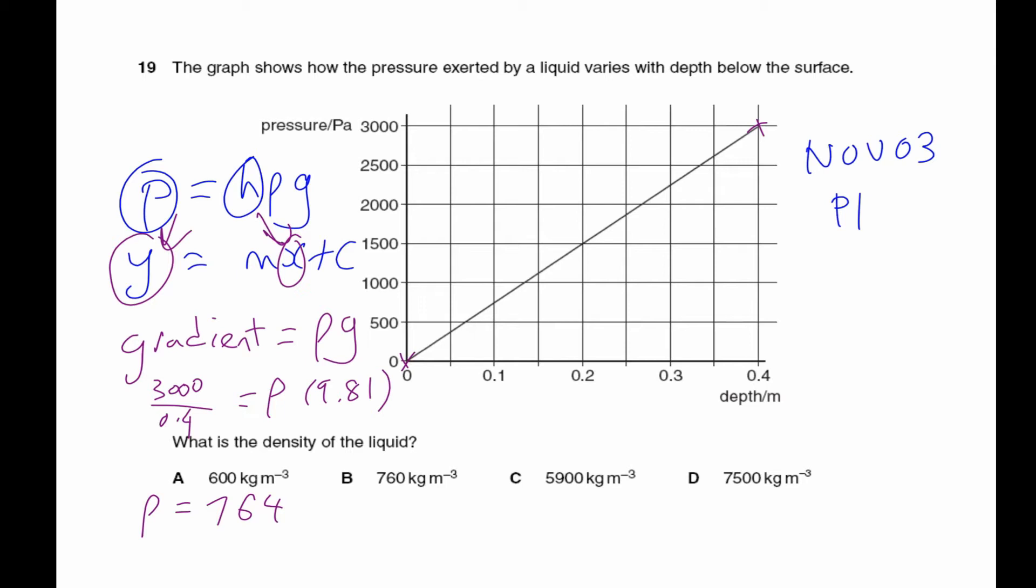Why do you get the same? Because if you take a single point and you take the gradient between that single point and zero-zero, it's basically the same. So let's say I'm taking the gradient between here and here—it'll be 3000 minus 0 over 0.4 minus 0, which is basically just taking a single value, 3000 over 0.4. Substitute your g and that's how you get your density.